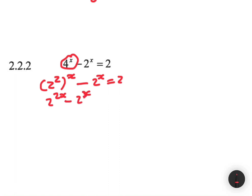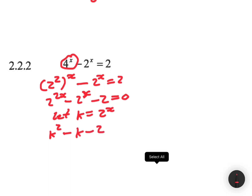Taking 2 to the right-hand side: 2 to the power 2x minus 2 to the power x minus 2 equals 0. Here we're going to factorize — it's a bit complicated as is, so I like letting k equal 2 to the power x. If you do that, you get k squared minus k minus 2 equals 0.